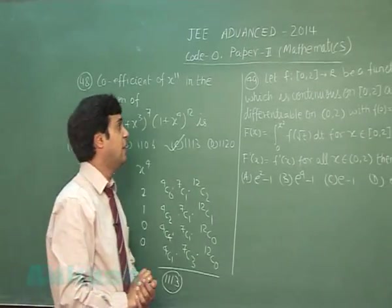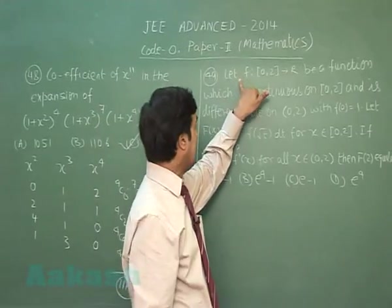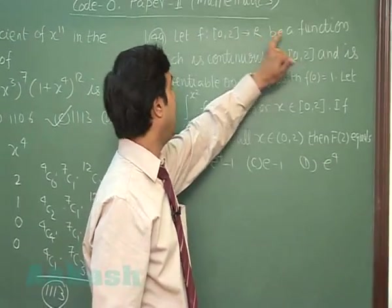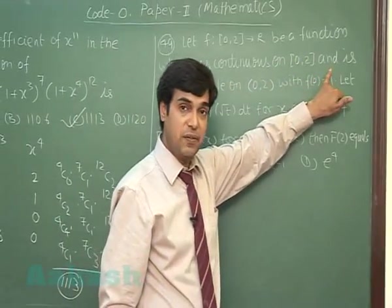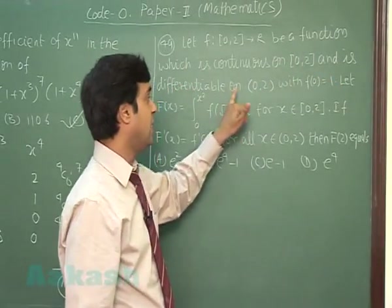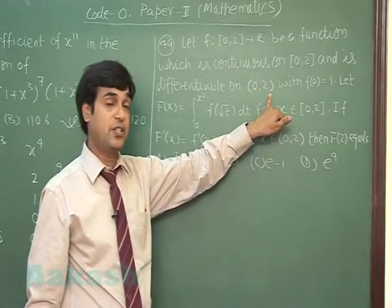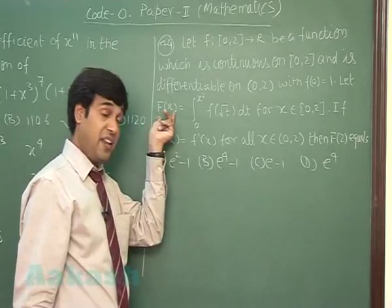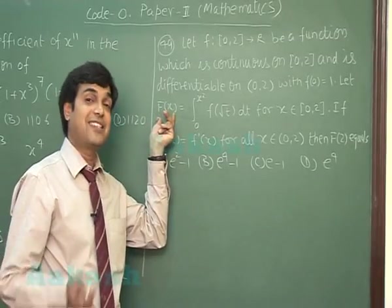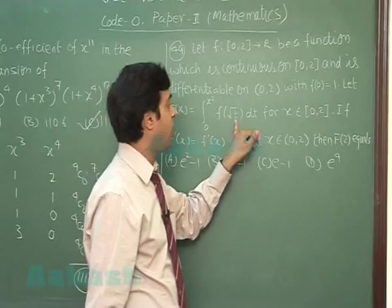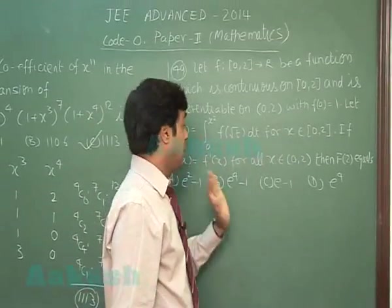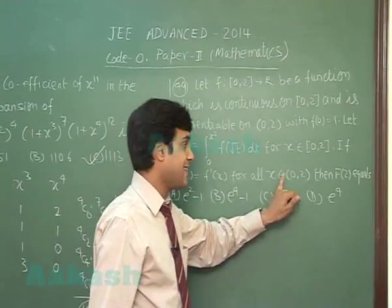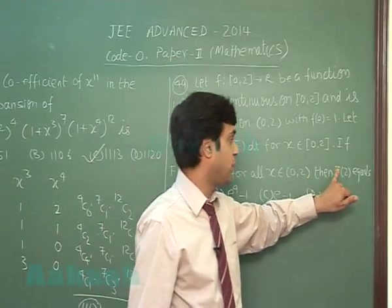Let's move to the next question 49. Let f from [0,2] to R be a function which is continuous on closed interval [0,2] and differentiable on open interval (0,2) with f(0) equals 1. Another function capital F is described as integral 0 to x² f of root t dt. If F'(x) equals f'(x) for all x in the interval [0,2], I have to find f(2).